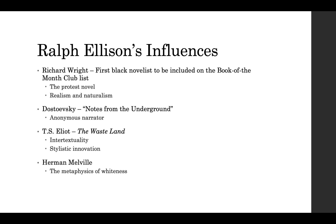Ellison's other influences included Dostoyevsky, from whom he took the trope of the anonymous narrator; T.S. Eliot, who also layered his writings with references to lots of other works of literature; and Herman Melville, whose novel Moby Dick is about the metaphysical qualities of whiteness and the role that whiteness plays as a trope or a symbol. It is a novel about a guy hunting a white whale, but the whiteness is a very powerful symbol in this book.